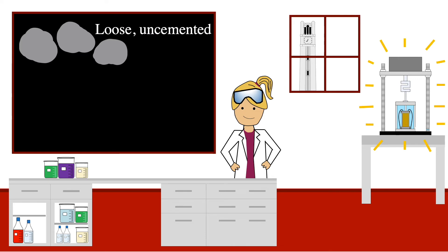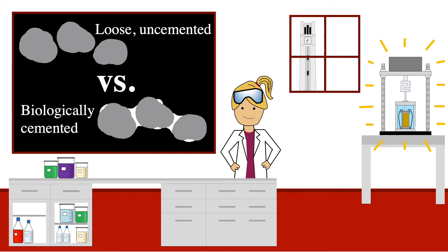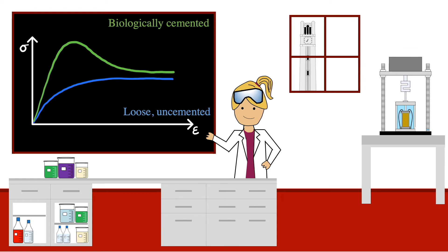Let's compare the results of a loose, uncemented sand with a biologically cemented sand. The biologically cemented sand experiences a larger maximum strength than the uncemented sand. After reaching the maximum strength, the cementation bonds between particles will begin to break, resulting in a decrease in strength.